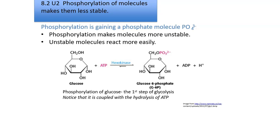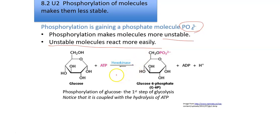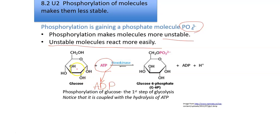What is phosphorylation? Phosphorylation is gaining a phosphate molecule, which has the form PO₄³⁻. Phosphorylation makes molecules more unstable, and unstable molecules react more easily. Phosphate is added to glucose to make it more unstable and speed up the reaction — that's why ATP gives its phosphate by converting to ADP. The phosphate goes to glucose, making glucose-6-phosphate.